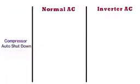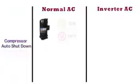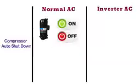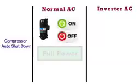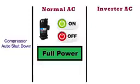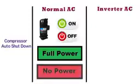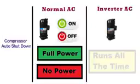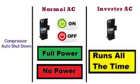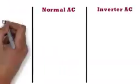Compressor auto shutdown: In case of normal AC, the compressor gets switched off and on frequently. The compressor of a normal AC either operates at full power or no power for maintaining the required temperature. Whereas in case of inverter AC, the compressor runs constantly all the time to regulate the required temperature.